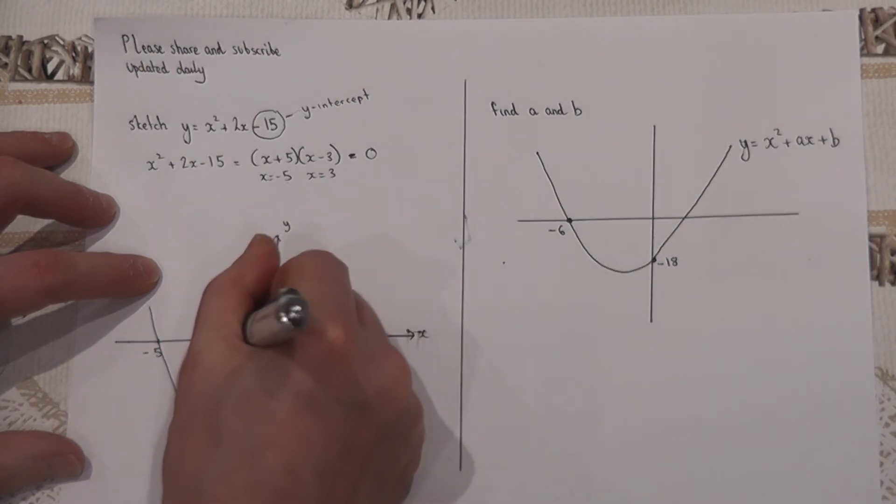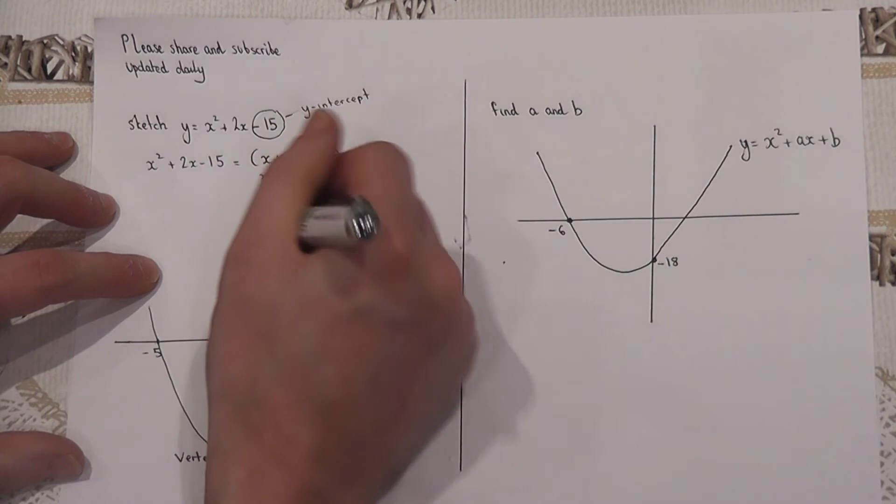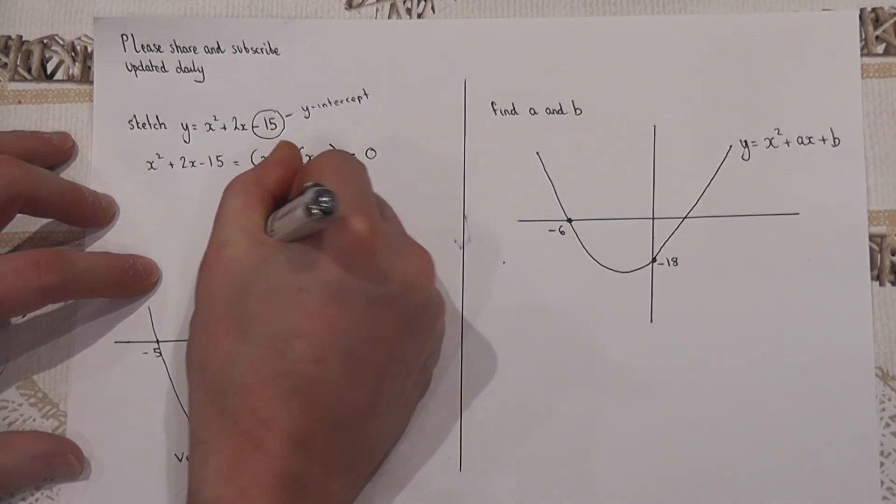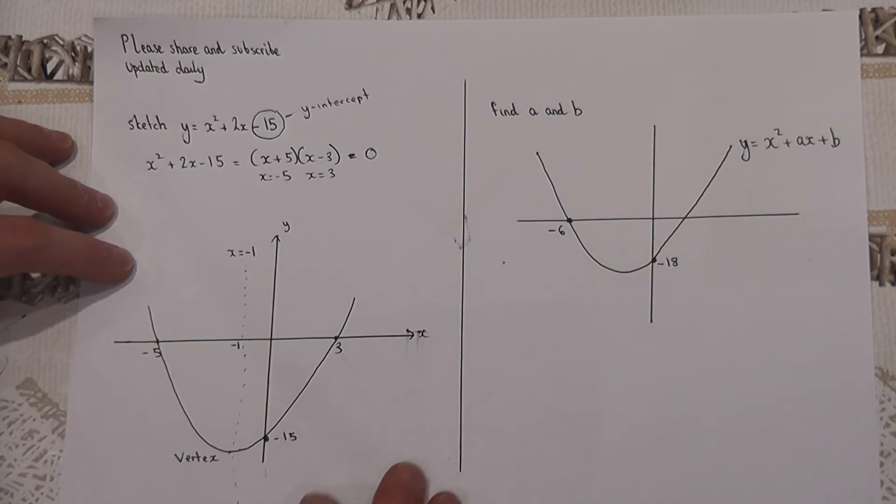This tells me that minus one is where the line passes through and this is called the line of symmetry. So my line of symmetry is at x equals minus one, and that can also be asked sometimes to find.